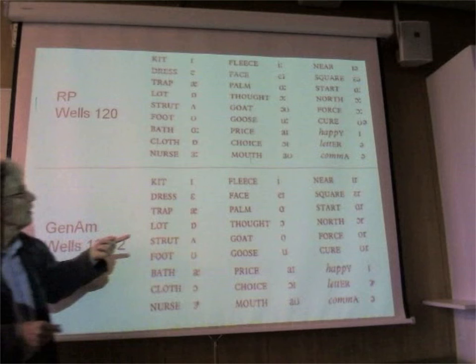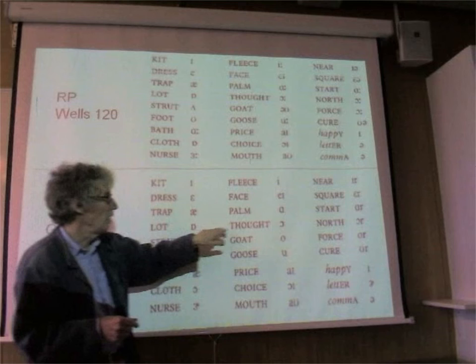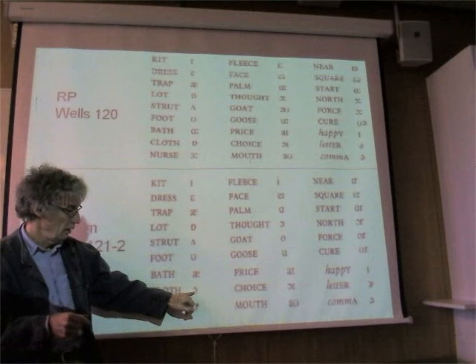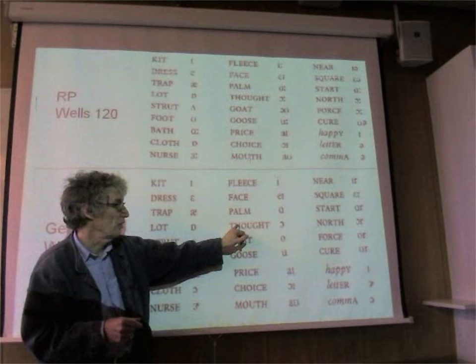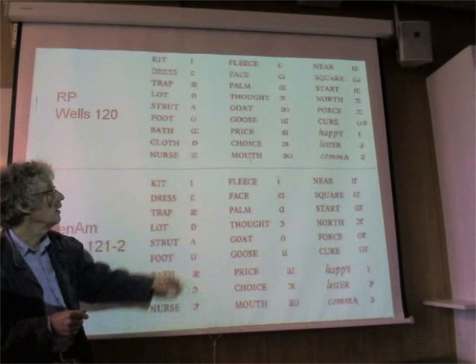Lot would be the same as palm. Cloth in some dialects is also the same as lot, palm, thought. Thought and cloth can be different in some dialects. In English it's different: cloth and thought. Although we have the same vowel in RP for north and thought, in American you might have north and thought, and then you've got 'fos' which has a different vowel. In English it's all the same vowel.